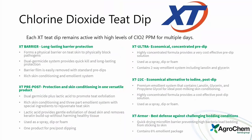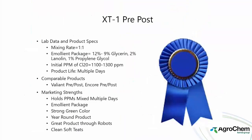Looking at XT One pre-post in depth: the XT products have a slightly different formulation than the Extra products and are longer lasting. Starting ppm is 1,100 to 1,300, which holds well over multiple days. Because it lasts multiple days, we do not need to start at 1,700–2,000 ppm. It kills effectively down to 500–600 ppm at high log kill rates. Comparable products include Valiant and Encore.